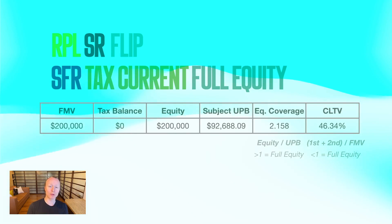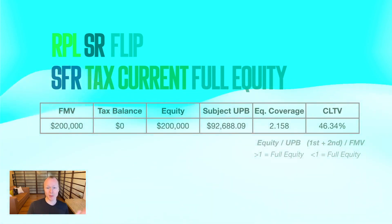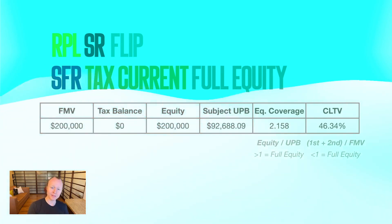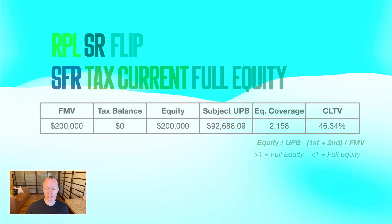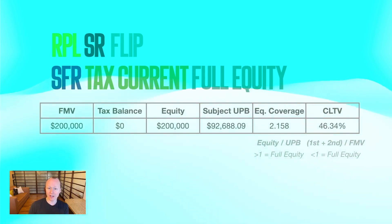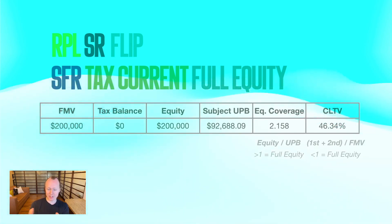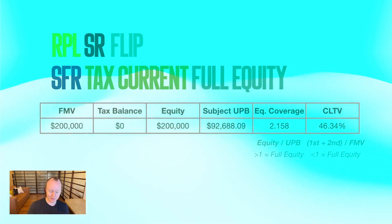The reason we break it down both ways — more importantly for junior position liens — is because equity coverage shows us the equity perspective from the investor's side, while CLTV combines all of the liens on the property, the first and the second, giving us the perspective of equity from the borrower's position. Sometimes equity coverage shows a full equity account but CLTV shows a negative or partial equity deal because the borrower has additional liens on the property.